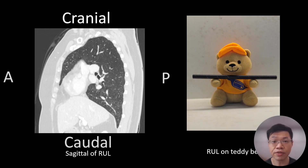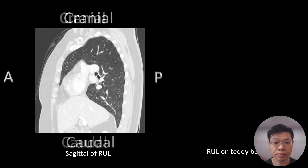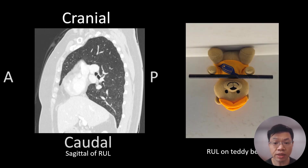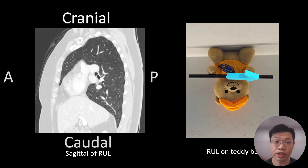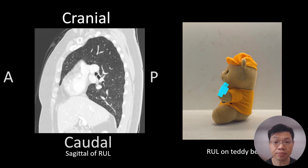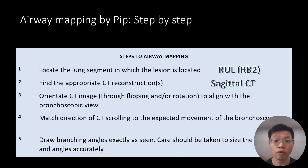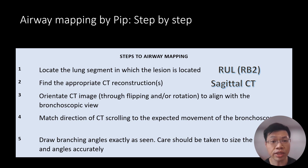We will again get teddy bear to help us to visualize this in 3D. The sagittal CT is on the left and the teddy bear on the right is demonstrating the right upper lobe airways as indicated. During bronchoscopy, the teddy bear is positioned as shown. Recall that our bronchoscope will be moving in the medial to lateral direction. This means that our bronchoscopic view is from the side of the teddy bear, and the blue arrow shows the bronchoscope moving in the medial to lateral plane. This demonstrates that our orientation of the bronchoscopic view will be exactly the same as the sagittal CT, with no flipping required. In summary, for the right upper lobe RV2, we just need to find the sagittal CT and then scroll the CT from medial to lateral.